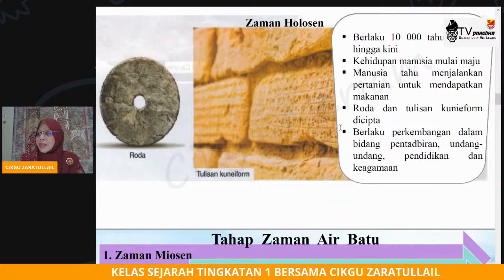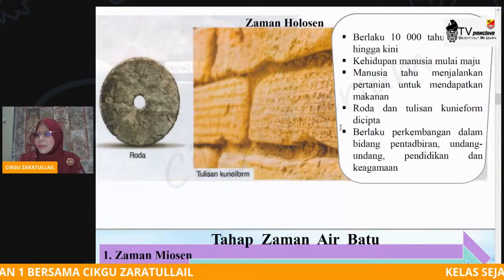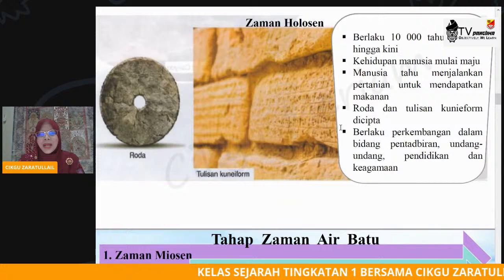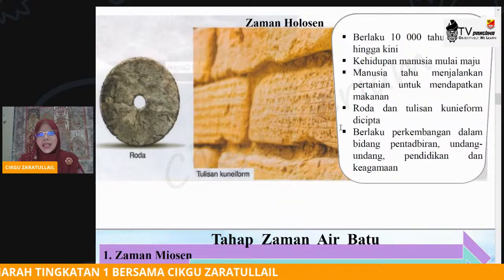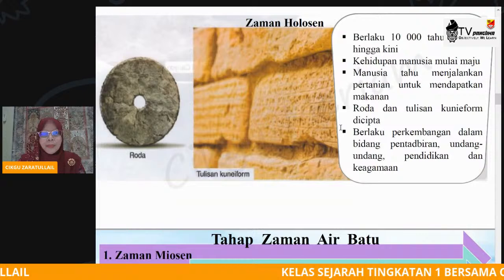Manusianya sudah semakin maju berbanding dengan manusia yang wujud pada 3 zaman sebelumnya. Semasa zaman Holosen ini, manusia juga tahu untuk menjalankan pertanian untuk mendapatkan makanan. Kalau sebelum itu mungkin mereka makan apa sahaja — mungkin mereka makan rumput-rumput, ranting-ranting kayu yang lembut.